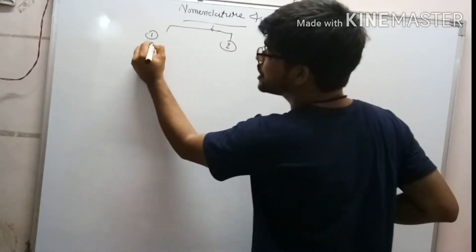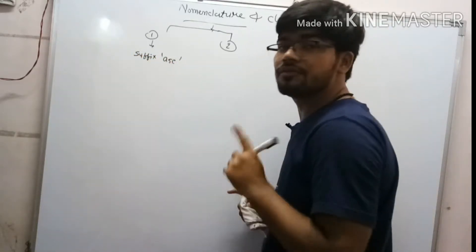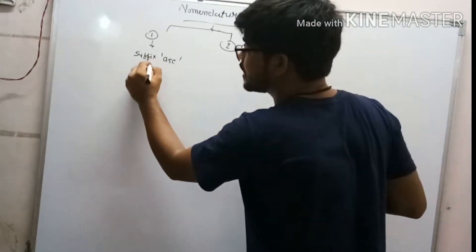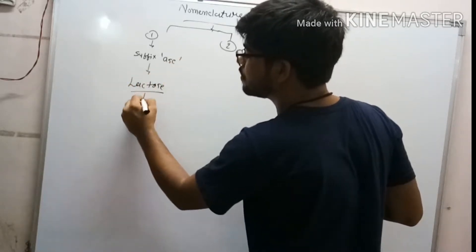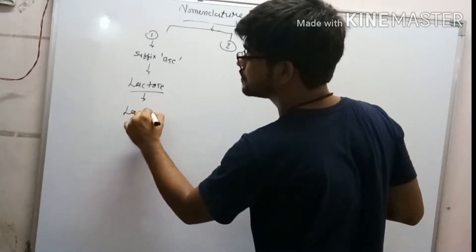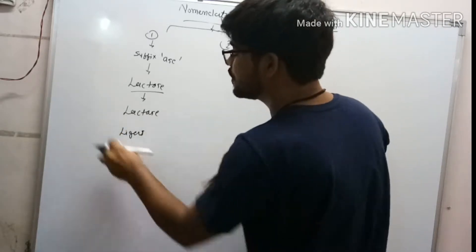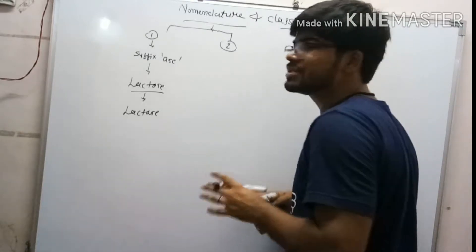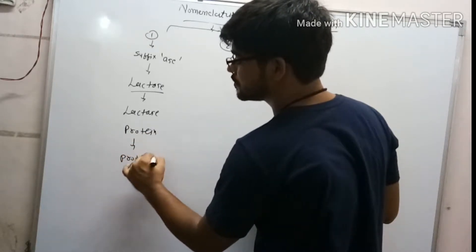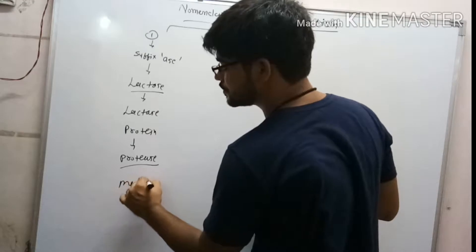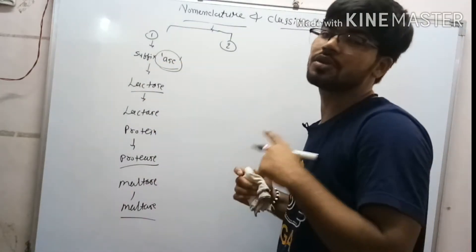First method is to give by adding suffix -ase behind the substrate which it uses. Like it works on a substrate lactose, then add suffix, so lactase. If it works on protein, so become protease. Maltose, so maltase. By adding suffix -ase on behind the substrate it works on.